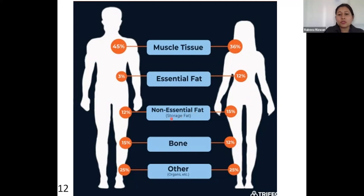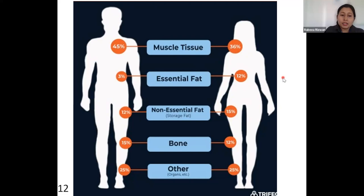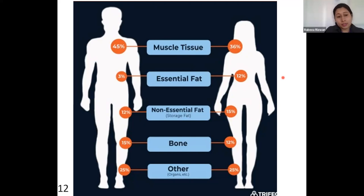The normal muscle composition in the body is 45% in males and 36% in females. If these values are abnormal, we suspect there may be some health abnormality. Keep in mind, however, that athletes and obese persons are exceptions — athletes may have greater muscle mass rather than fat mass.